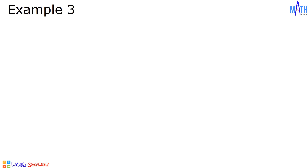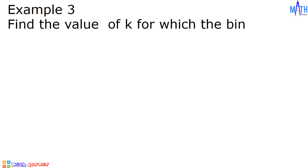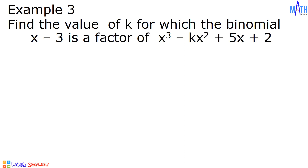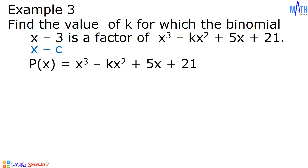So, example number 3: let us find the value of k for which the binomial x minus 3 is a factor of x cubed minus kx squared plus 5x plus 21. In this example, x minus 3 is of the form x minus c where c is equal to 3. Let p of x equal x cubed minus kx squared plus 5x plus 21.